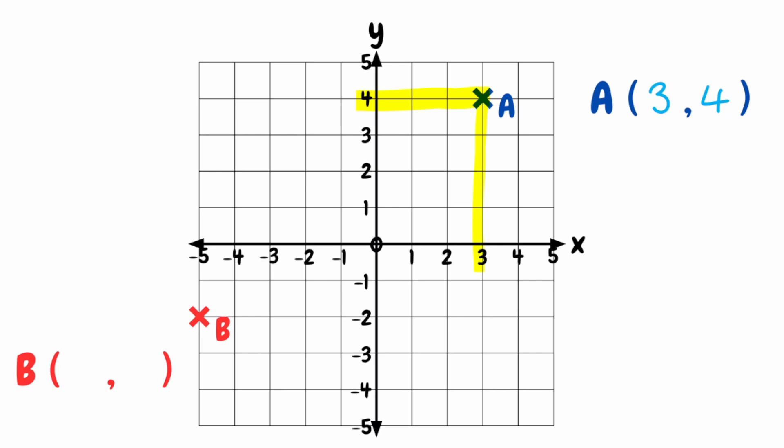Now we can do exactly the same for point B. Starting with its x-coordinate, we want to see where point B lines up on the x-axis. If we draw a line up to the x-axis, that's in line with negative 5, so that would be our x-coordinate. And to find our y-coordinate, we see where point B lines up with the y-axis. Looking across, we can see it hits at negative 2, so our y-coordinate for B would be negative 2.